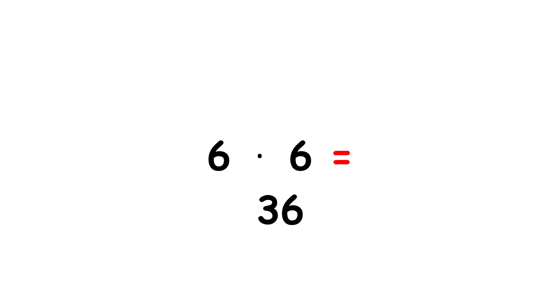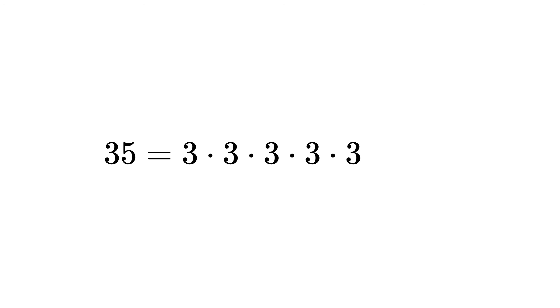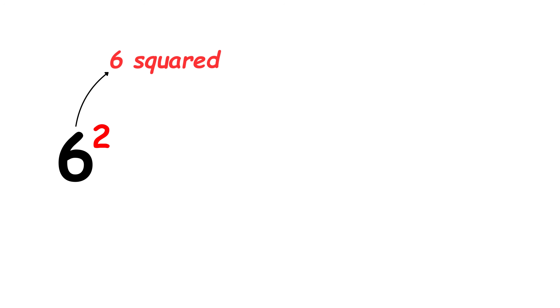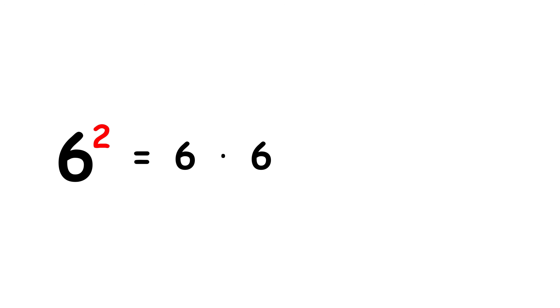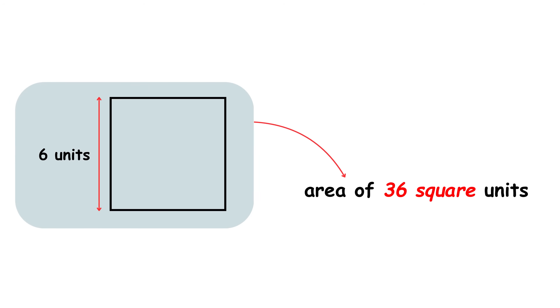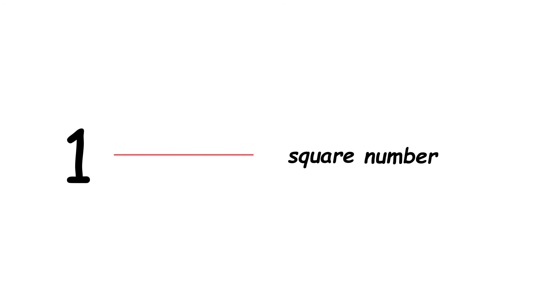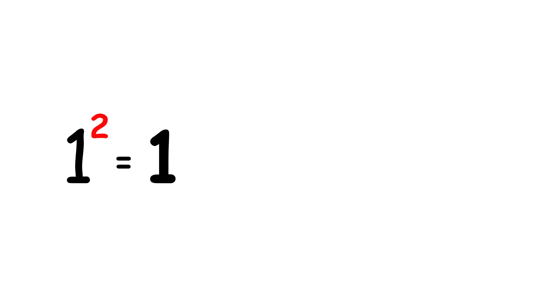Let's start by defining a few terms. Pick a whole number and multiply it by itself. The result is called a square number. For example, 6 times 6 equals 36, so 36 is a square number. This can also be expressed using exponentiation, which is repeated multiplication: 6 to the second power, also pronounced 6 squared, is equal to 6 times 6, which is equal to 36. Geometrically, a square whose side length is 6 units has an area of 36 square units, which is why we use the word square. The number 1 is a square number because 1 squared equals 1.